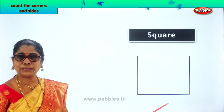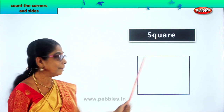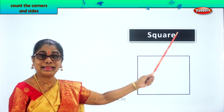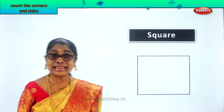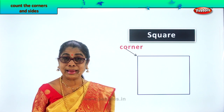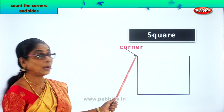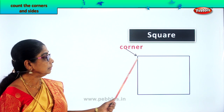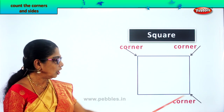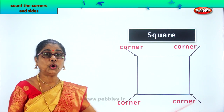What plain figure is this? This is a square. All four sides are equal. This is a square. Let's count the corners of a square — a plain figure. One corner, two corners, three corners, four corners. The square has four corners.